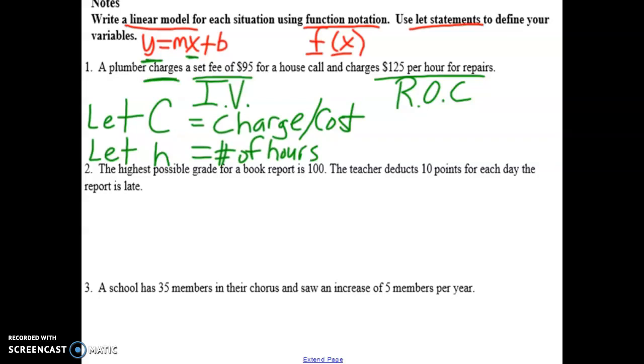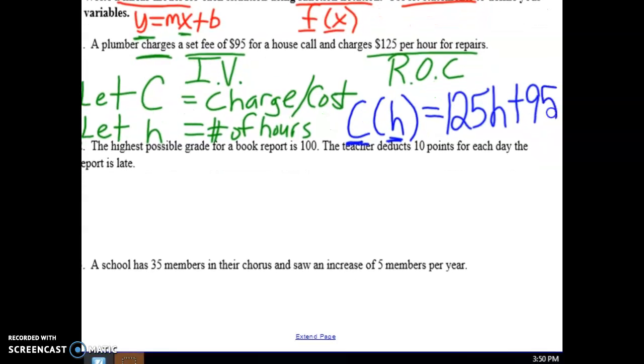So there we got C and H. And we've got our 95, our initial value, and our 125, our rate of change. It's time to put it all together. Well, the function notation is going to look like this. C parenthesis H. Because we know that the H is the input and the C is the output. Now we continue with the expression.